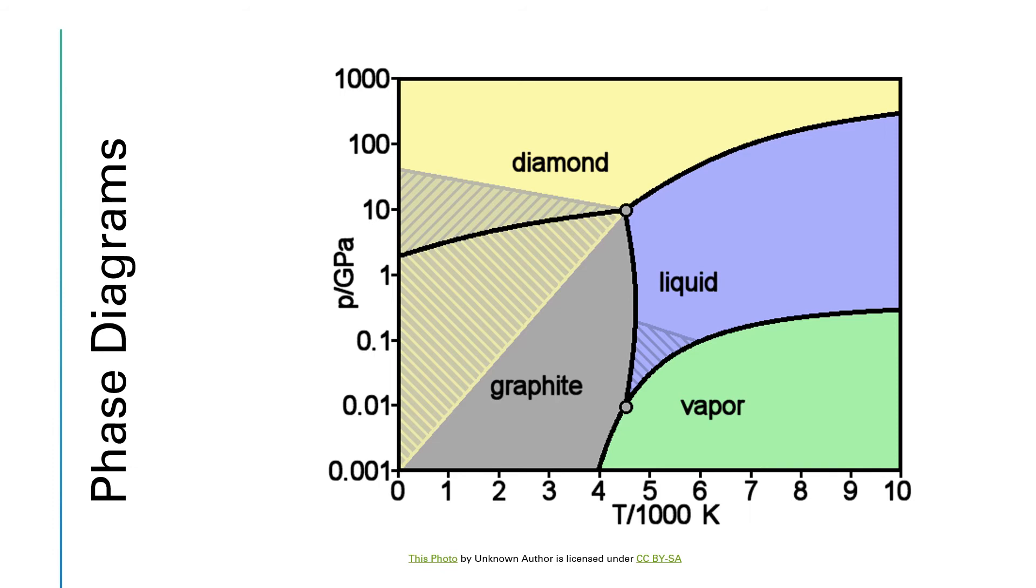In this case, this is the phase diagram for carbon. And carbon has two crystalline solid forms. One of them is known as diamond and the other one is known as graphite. And so in this phase diagram, we're seeing that there's more than one solid phase present.